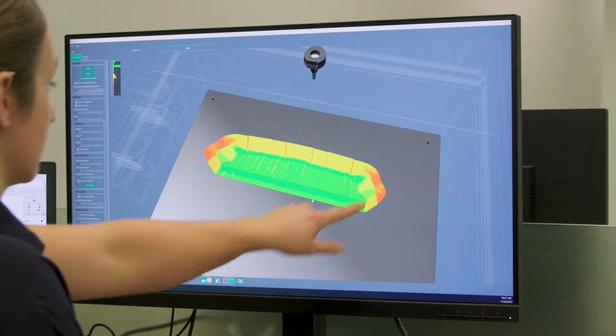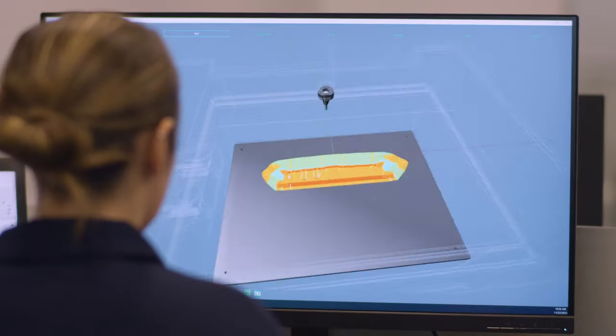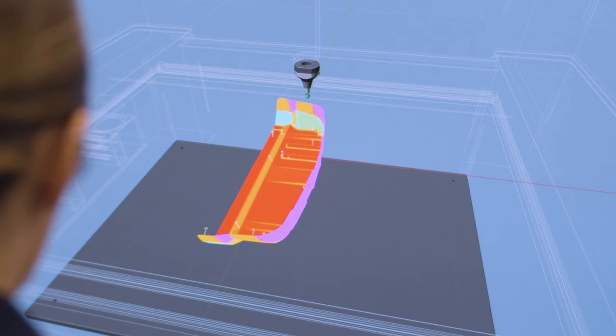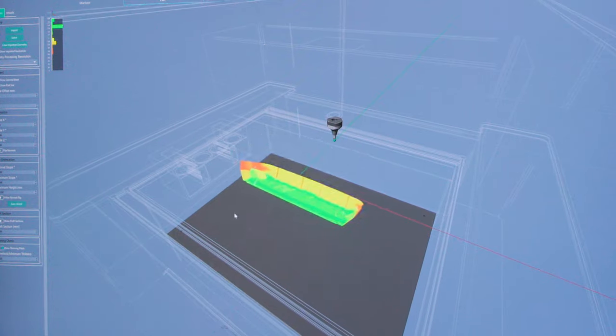We have other features in the software like auto-orientation, and this really analyzes the part and automatically orients it to the right direction for ease of formability and creating an accurate final part.